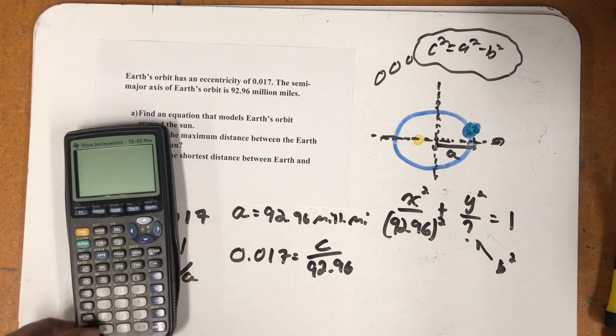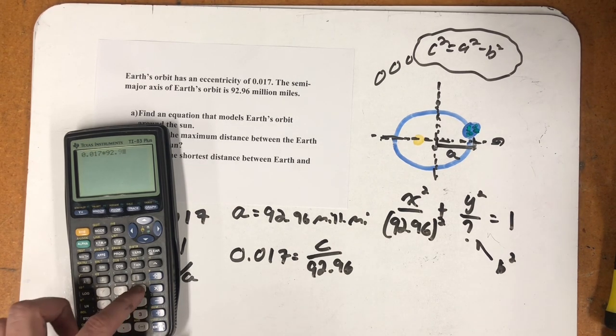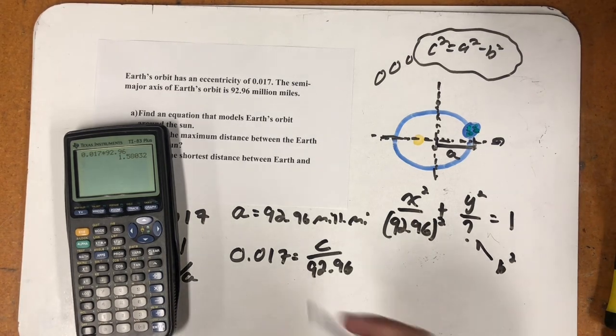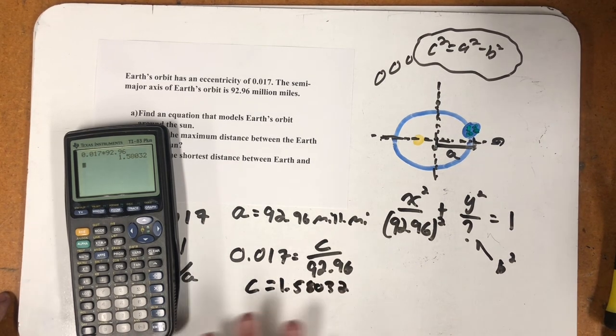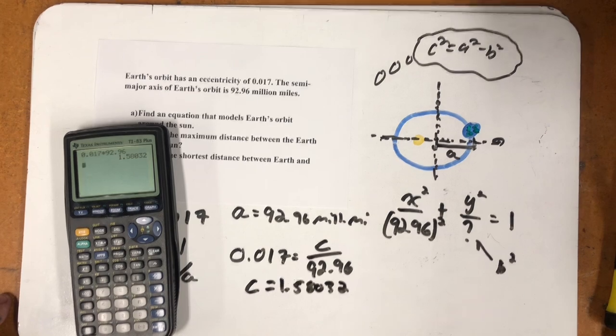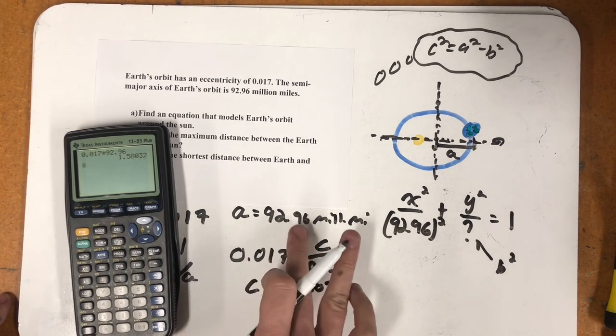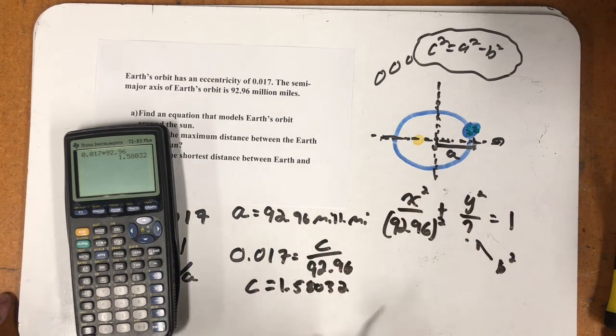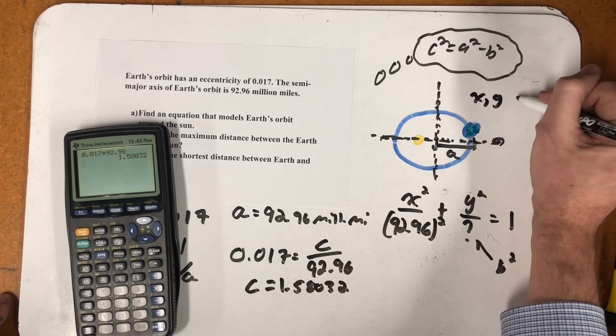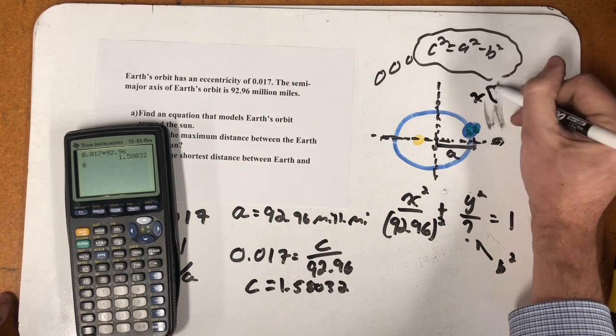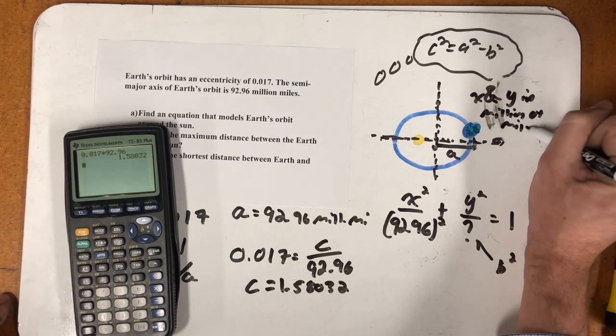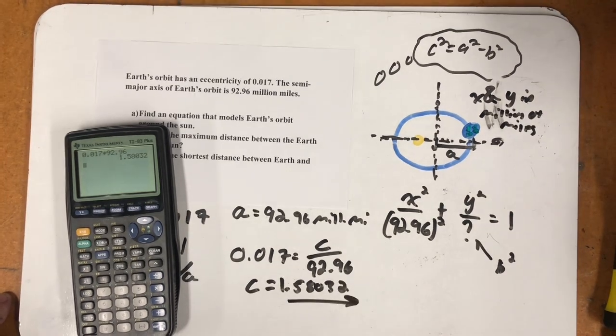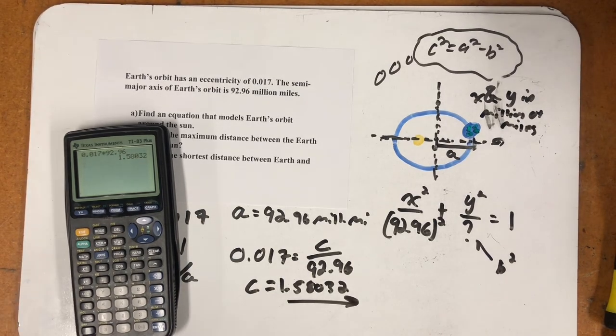So, get out our trusty TI-83. 0.017 times 92.96. C is equal to 1.58032. And I'm going to write everything out, because I'll round at the end, and I don't want to compound any errors. And I hope you've noticed, but I'm just using the 92.96. I'm going to let X and Y be in millions of miles. So, X and Y in millions of miles. I'm going to make the numbers way easier to deal with here, but it makes it important to carry out as much information as I can here in the middle of the problem.